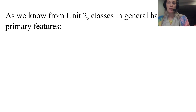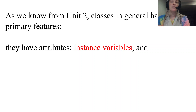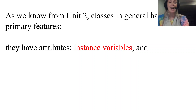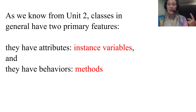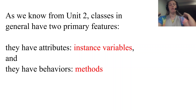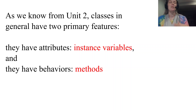As we know from Unit 2, classes in general have those two primary features. They have attributes, which are represented as instance variables, and then they also have behaviors, which are represented as methods. So instance variables, methods, and constructors — those are really the only things we've talked about in terms of objects so far.